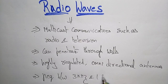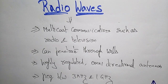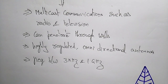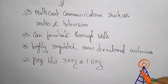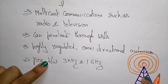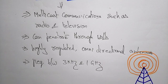The frequency range of radio waves is between 3 kilohertz and 1 gigahertz. For example, if you have a tower with an antenna, the radio signals are transmitted from that antenna, providing multicast communications for radios and televisions.